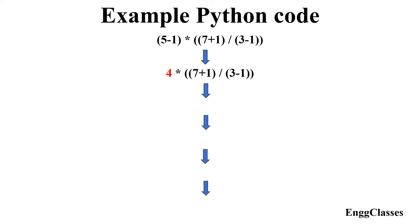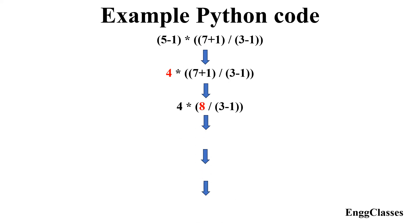Next, we think about which operator is performed next. We have the second parenthesis: (7 + 1), which is performed next giving 8. The rest of the expression is retained. Then the inner parenthesis (3 - 1) is evaluated, giving 2.